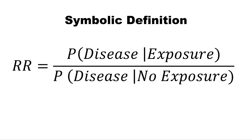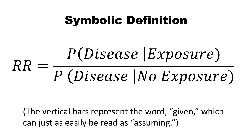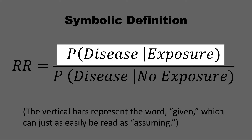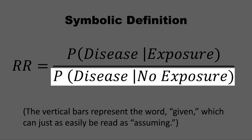This is the symbolic definition of relative risk. The vertical bars represent the word 'given,' which can just as easily be read as 'assuming.' So the numerator is the probability of acquiring a disease of interest given exposure, and the denominator is the probability of acquiring this disease given no exposure.